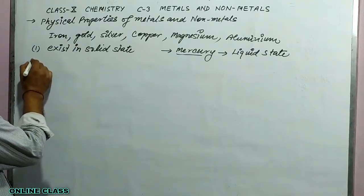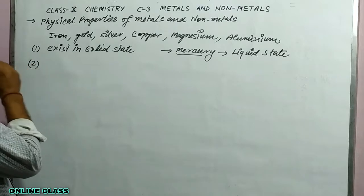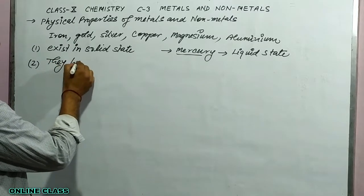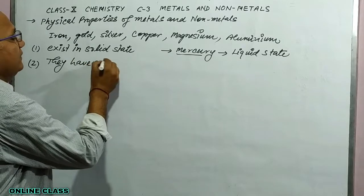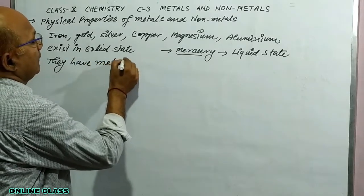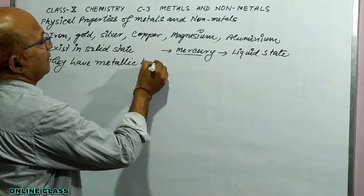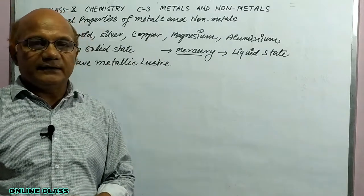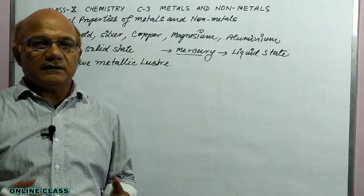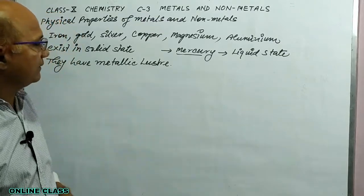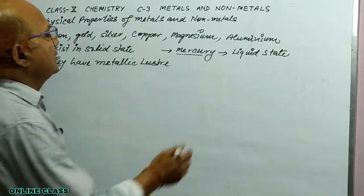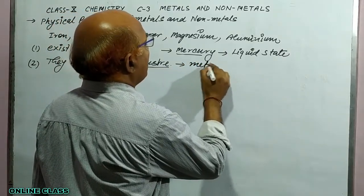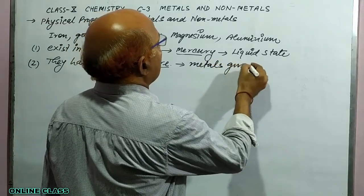The second property is they have metallic lustre. Metallic lustre means metals give shine — the freshly cut surface of a metal gives shine. So this property is called metallic lustre.